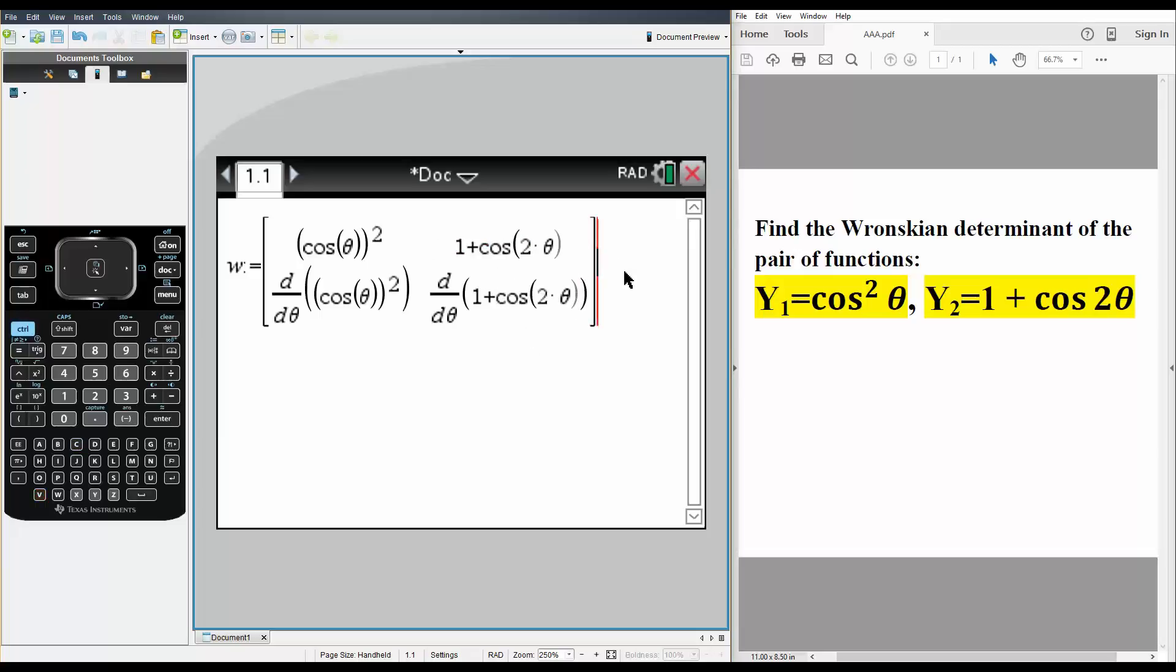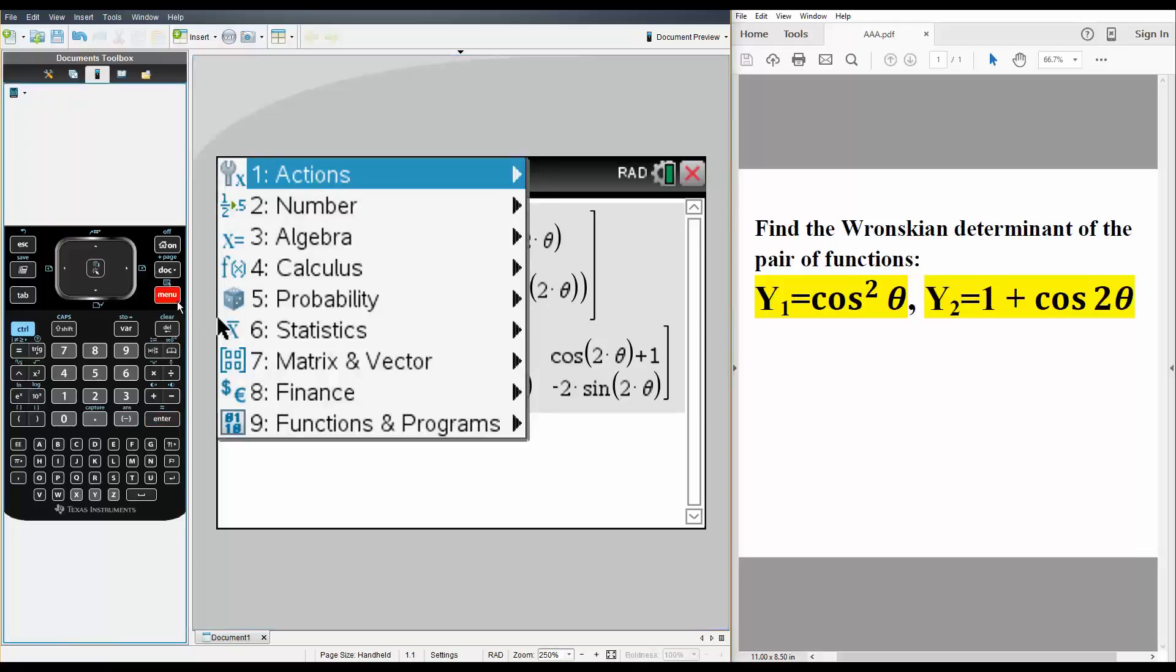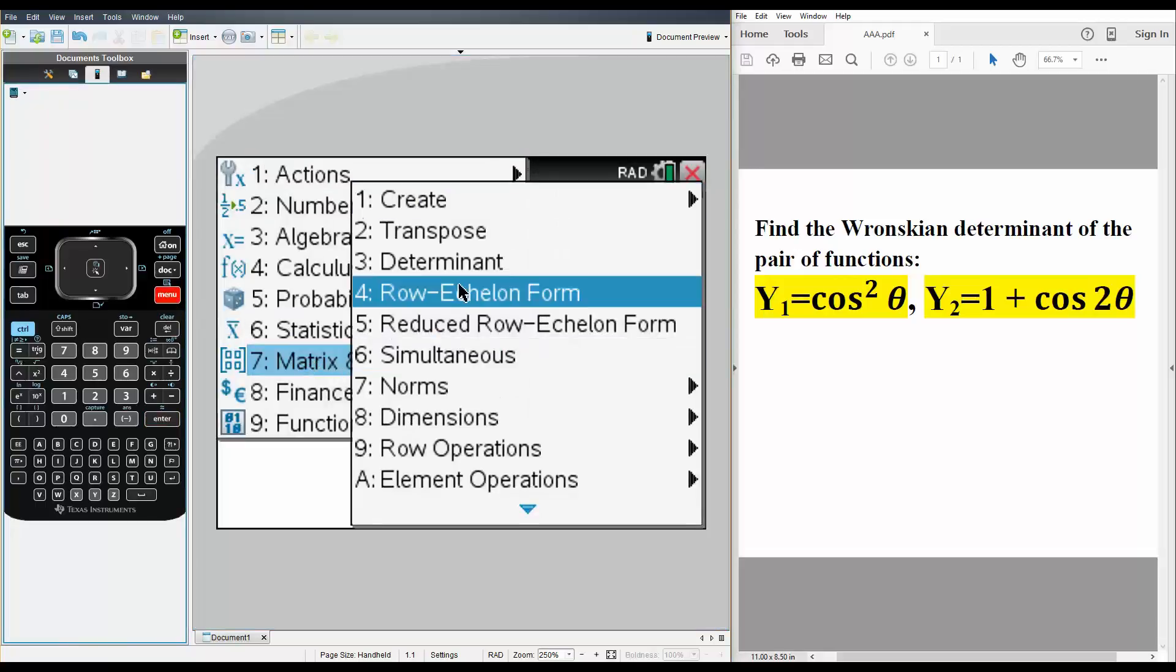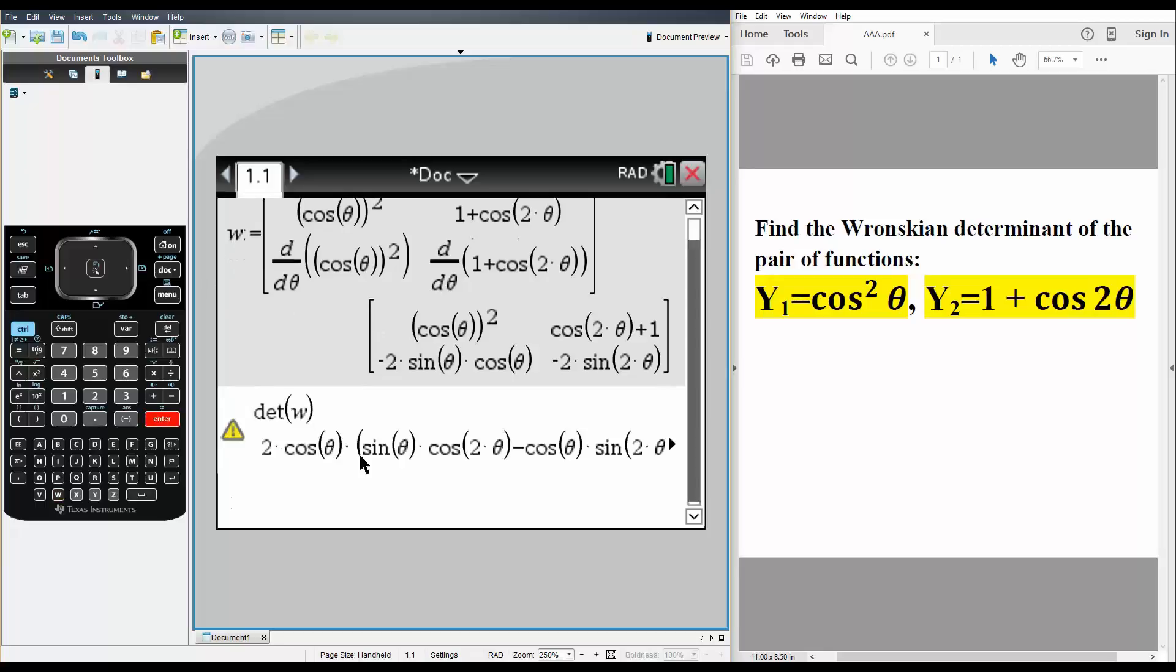Simply hit enter, and this is our 2 by 2 matrix. Next, we want to get the determinant. We hit menu, 7 for matrix, then determinant, and we define W. But we're not there yet - the answer we have right now is not clear. We don't know if the determinant is going to be 0 or not.